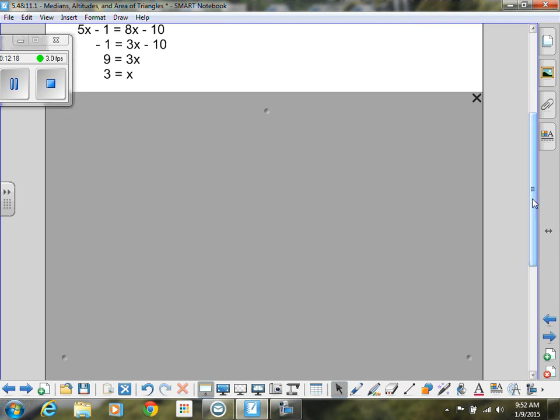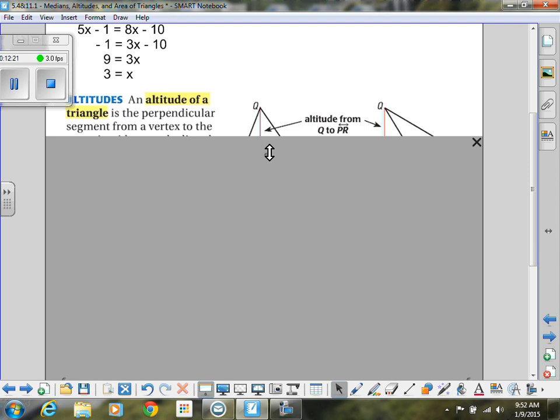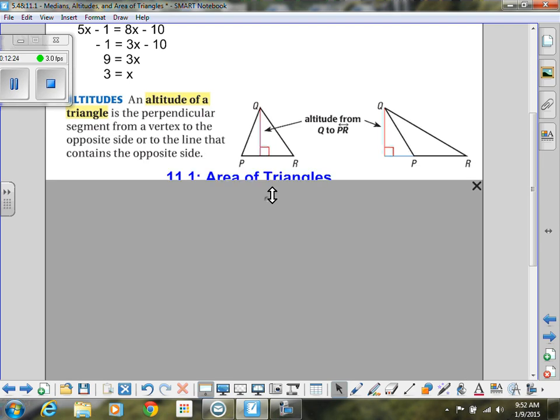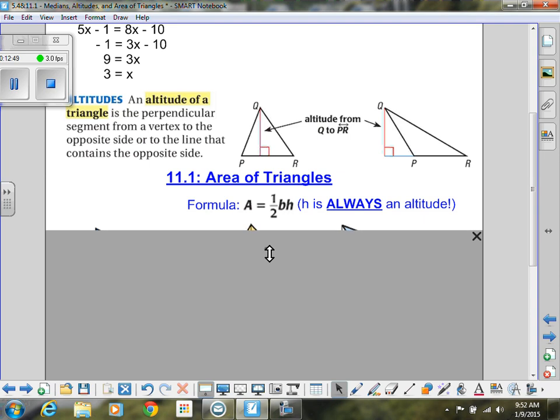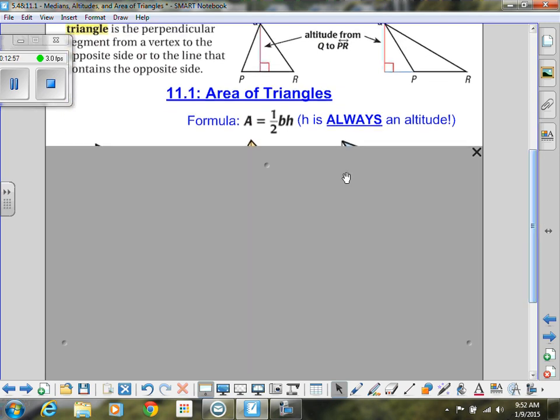And now we're going to talk about another kind of segment, and that's an altitude. Altitude is just the segment in a triangle. It's a perpendicular segment. So you see this is an altitude, and it goes from the vertex to the opposite side. Notice that it doesn't necessarily have to be in the midpoint. Over here, it doesn't even have to be inside the triangle. It just has to go from the vertex straight down to the opposite side. Altitude is another name for height of a triangle. So that's what we're going to talk about, area of triangles, because we know the formula is one-half times base times height. And H is always going to be an altitude.